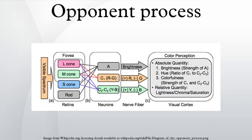Hue cancellation experiments start with a color and attempt to determine how much of the opponent color of one of the starting color's components must be added to eliminate any hint of that component from the starting color.